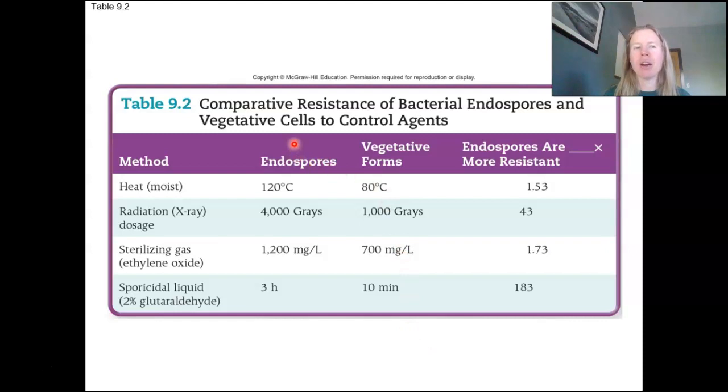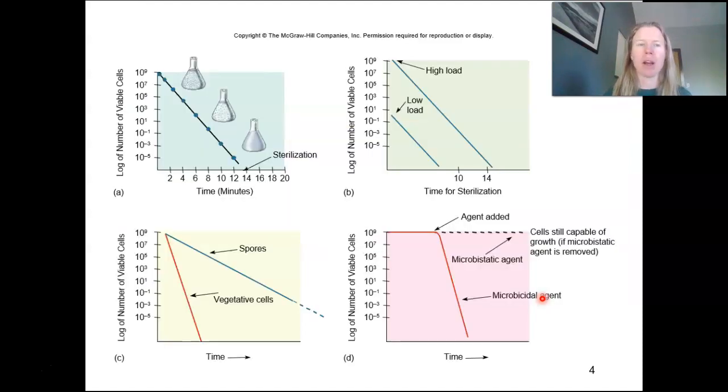So again, you don't have to memorize this whole scale, but you definitely want to have in your mind. Bacterial endospores, super difficult to kill. Maybe gram negatives are harder to kill than gram positives. Non-enveloped viruses are harder to kill than enveloped viruses. Those sorts of things.